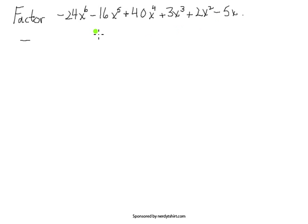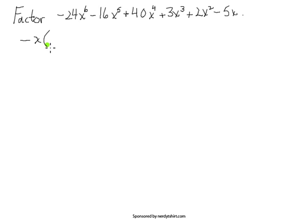Scanning through this, there don't seem to be any common factors to the coefficients 24, 16, 40, 3, 2, and 5, so there's nothing you can get out in regards to that. But there is at least one common factor of x everywhere, so you can pull out that x. So minus x is the greatest common factor you can pull out of this.